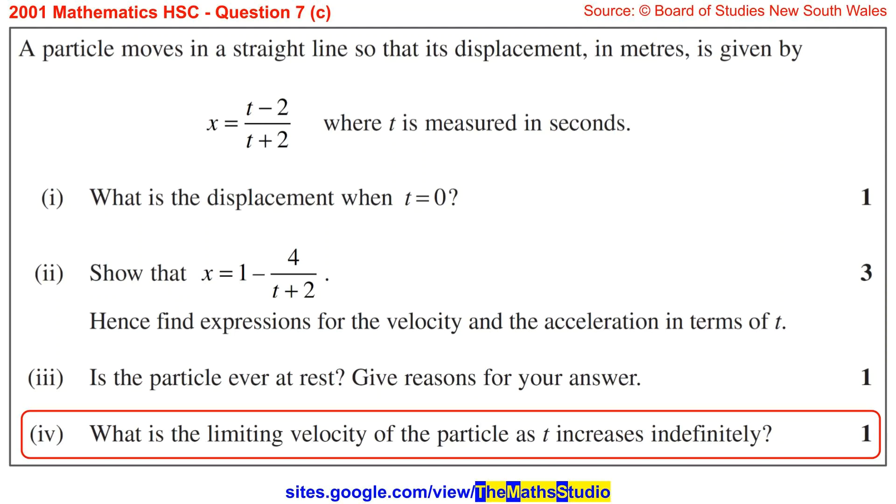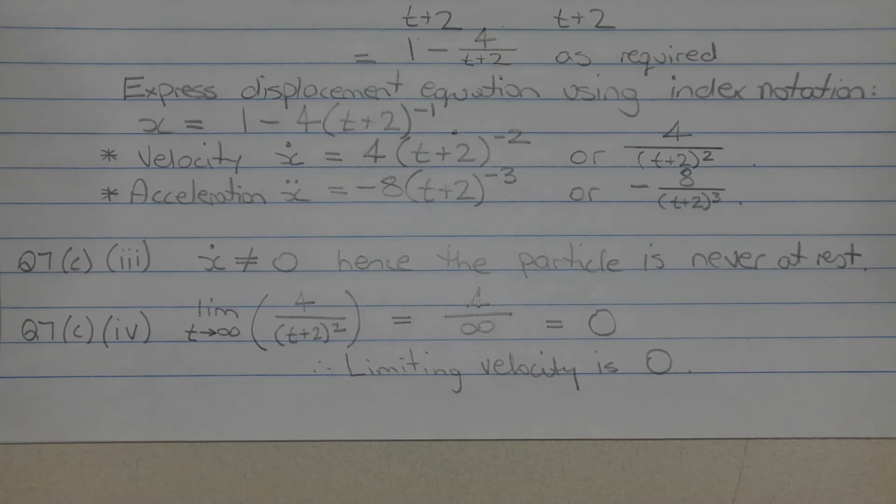Part 4. What is the limiting velocity of the particle as t increases indefinitely? The limiting velocity of the particle can be found by finding the limit as t approaches infinity of the velocity equation 4 over t plus 2 in brackets all squared. Now if we let t equal infinity, infinity plus 2 is just equal to infinity and squaring infinity will just give infinity again. And 4 over infinity is just equal to 0. Therefore the limiting velocity of the particle is 0.